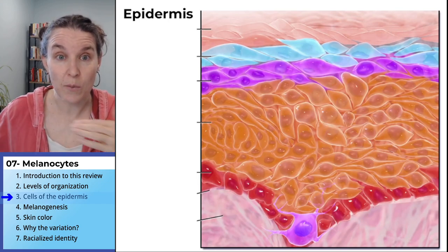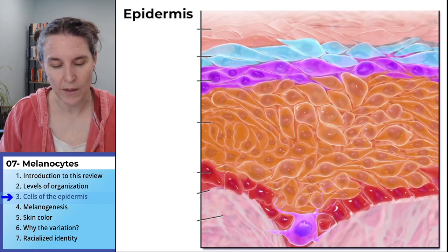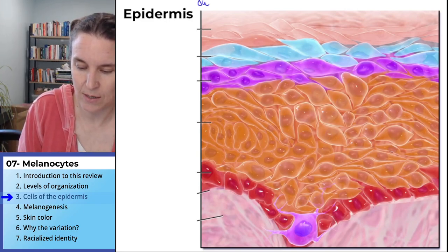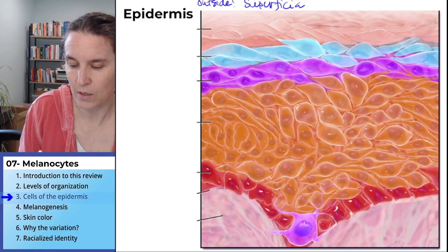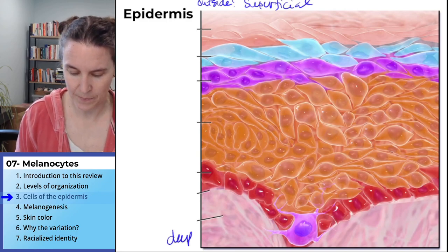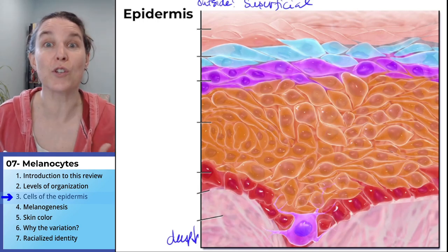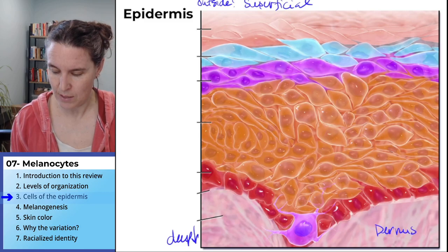Do you agree that we have multiple layers here? Remember, this is the outside — this is superficial. And this is deep. We're going toward the dermis. This right here, the light pink stuff, is dermis.